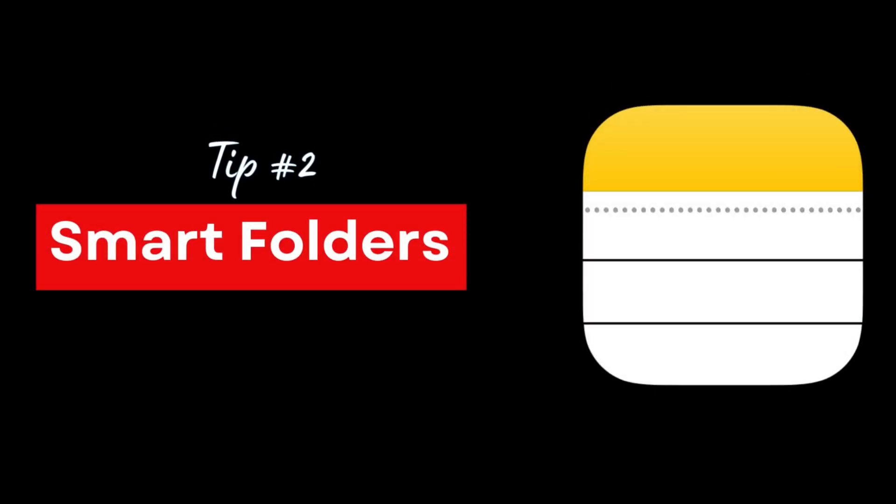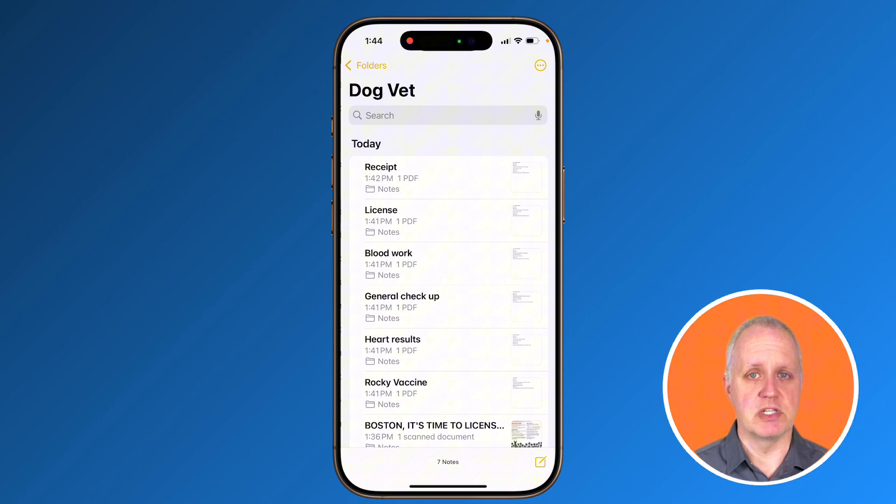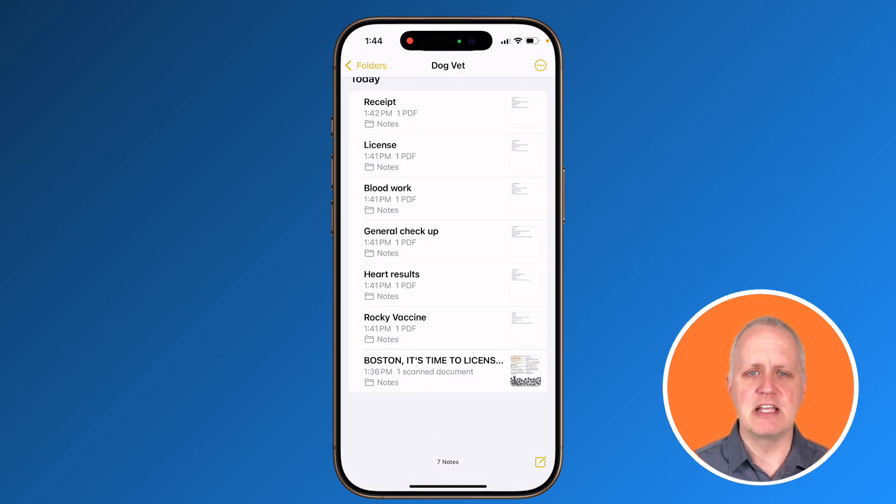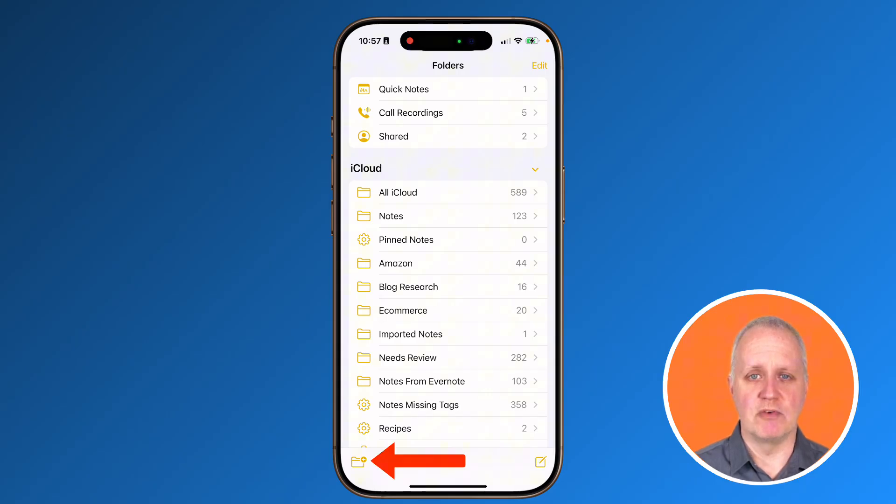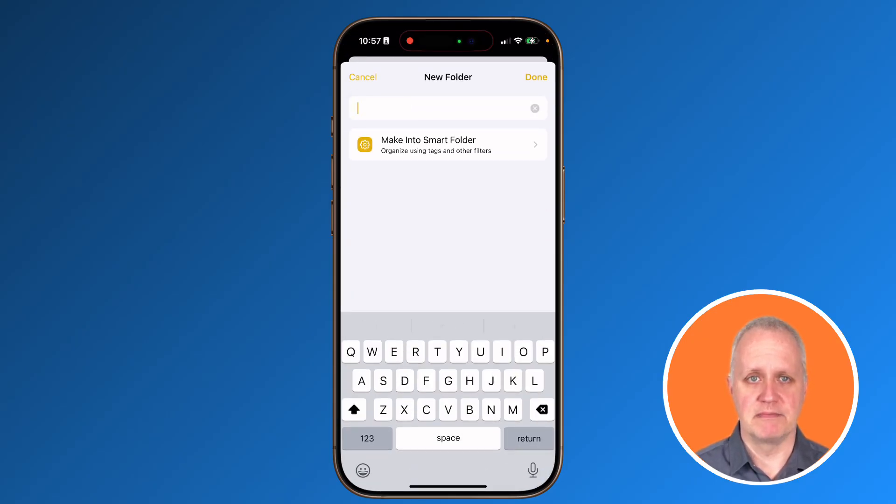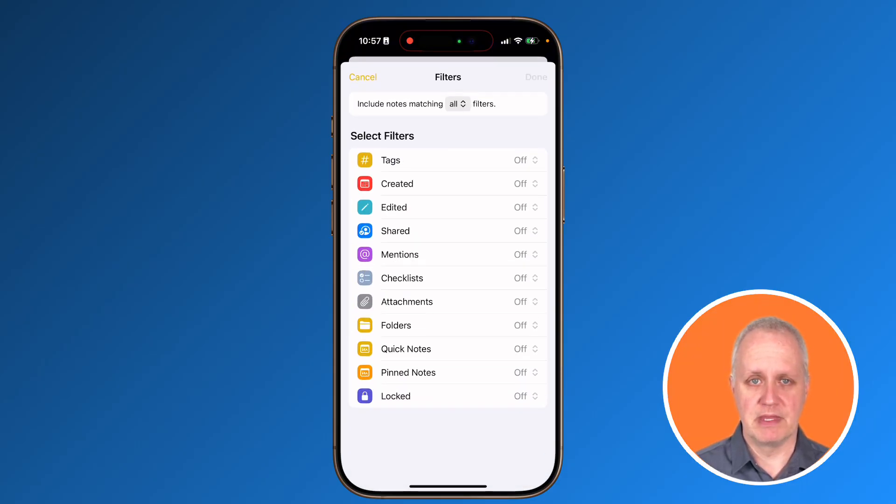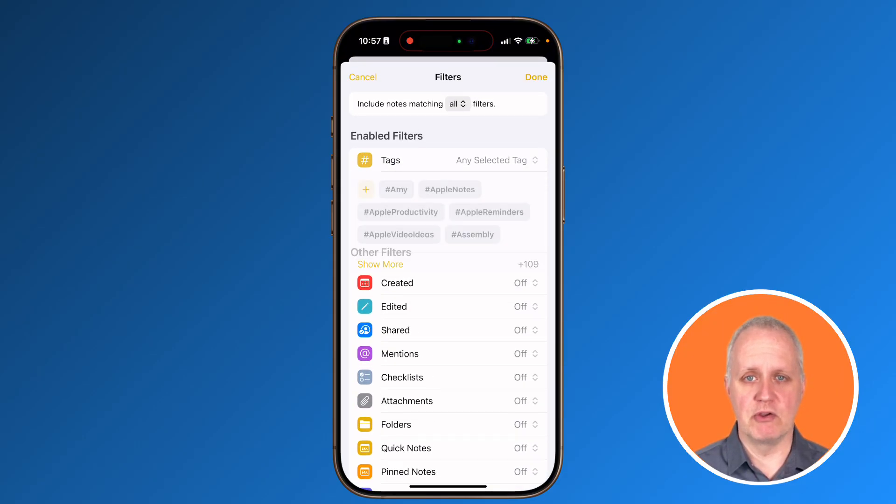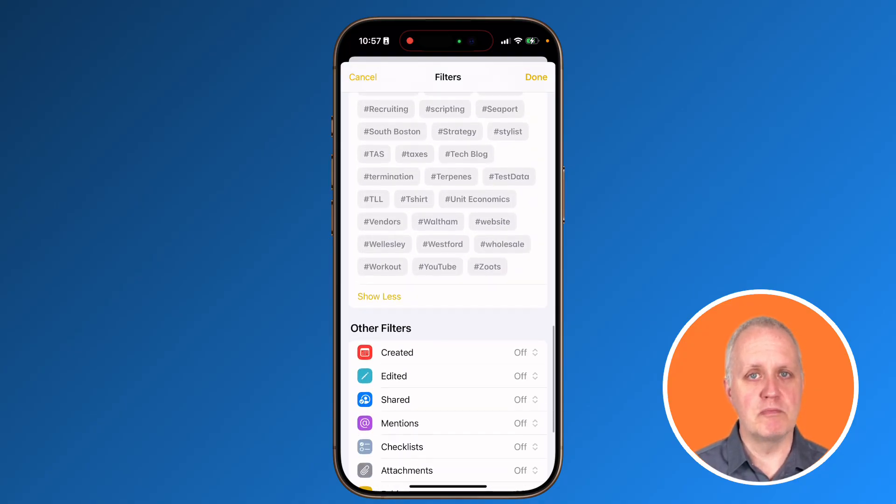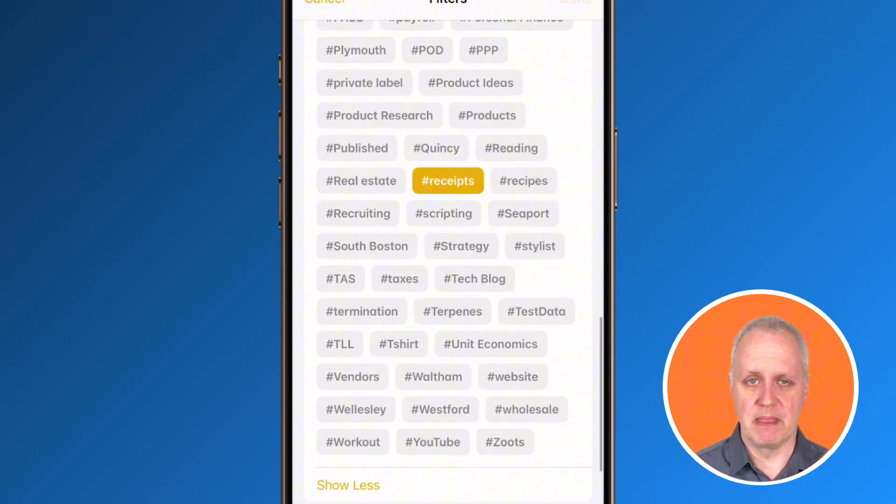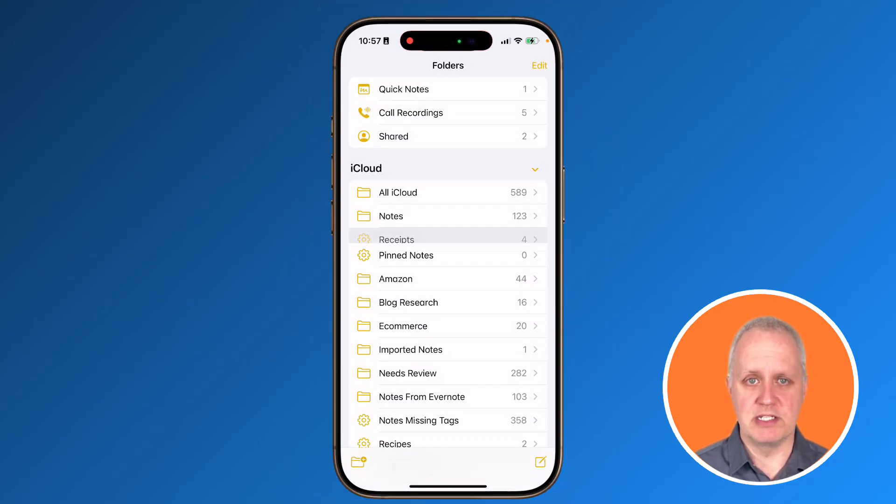Imagine a world where your notes organize themselves. Smart folders let you group notes automatically. It's a fantastic time saver. Here's how to set up your first smart folder. Tap the folders button, the back arrow at the top left. Tap the folder icon with a plus sign. Name your folder and choose make into smart folder. We have all these different criteria we can use to automatically pull notes. We can use tags, dates, or group by other folders, for example. Then tap done when you have selected your criteria.